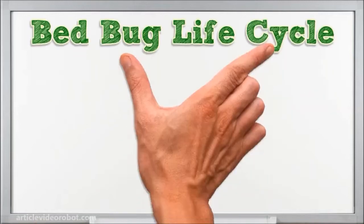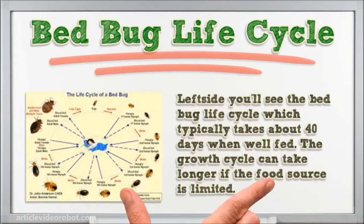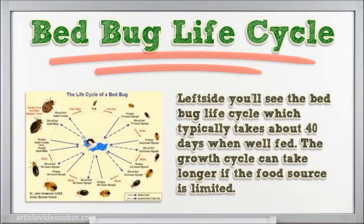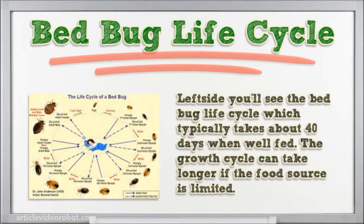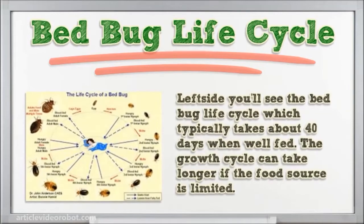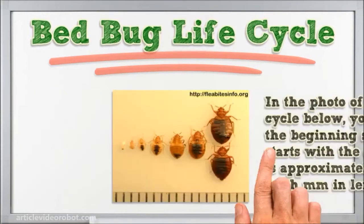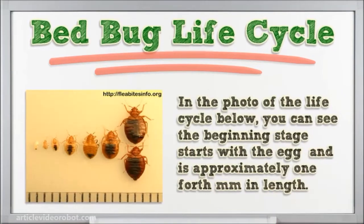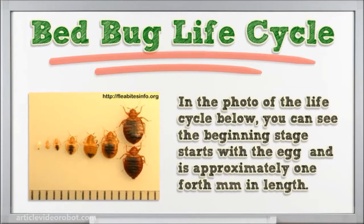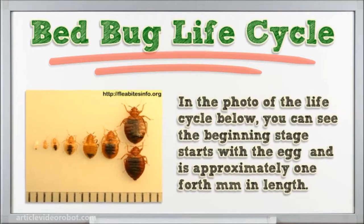The bed bug life cycle typically takes about 40 days when well fed, and the growth cycle can take longer if the food source is limited. In the photo of the life cycle, you can see the beginning stage starts with the egg, which is approximately one-fourth of a millimeter in length.